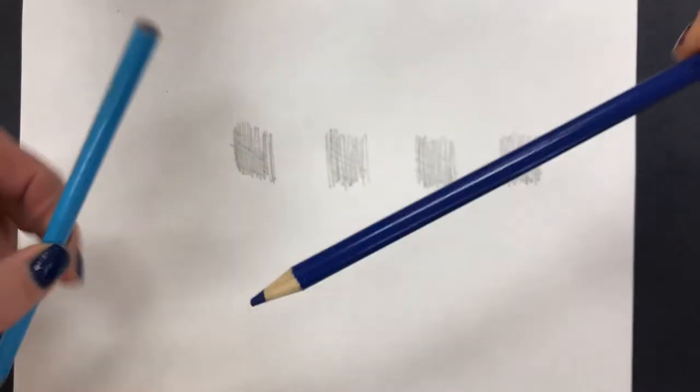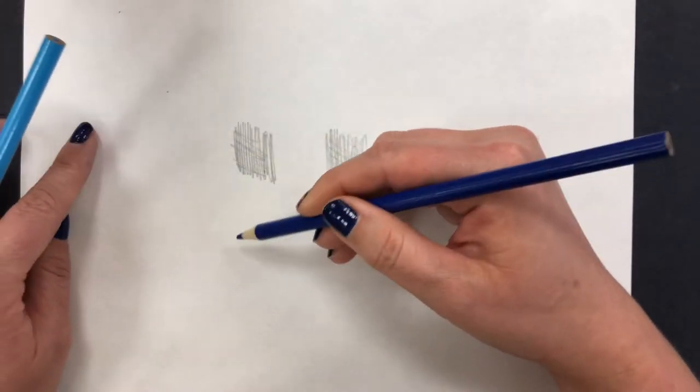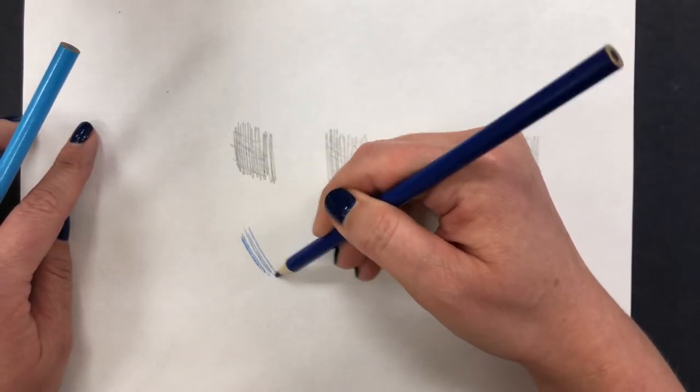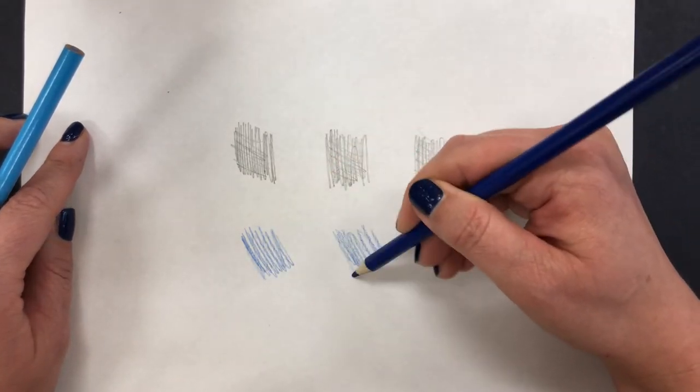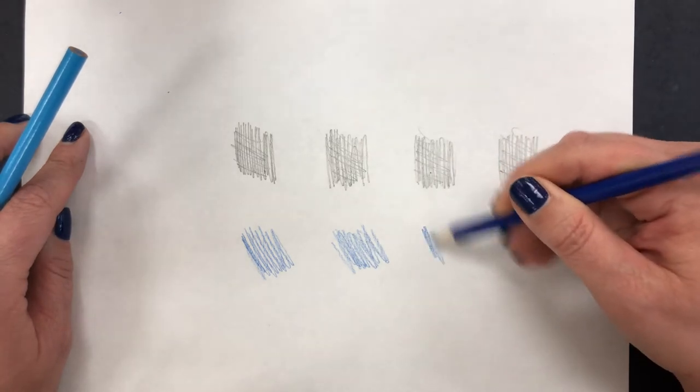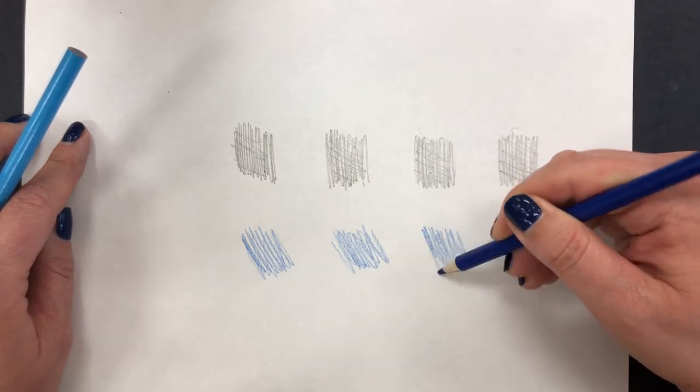And I'm going to do the same thing also with colored pencil, just to show you that you can blend colored pencil as well. And I am not using a great quality paper here. I'm using just regular old printer paper. Nothing fancy.